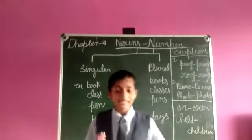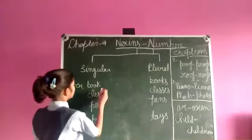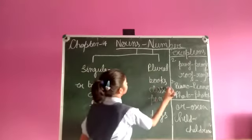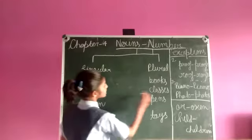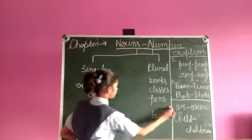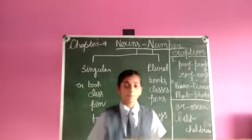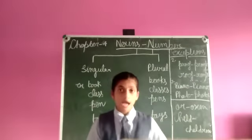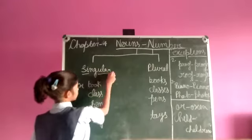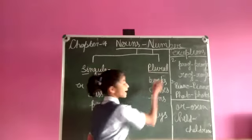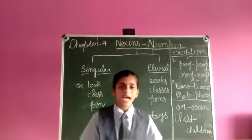By some examples, let's learn about number. Book becomes books, class becomes glasses, pen becomes pens, toy becomes toys. These are some examples of numbers. Numbers are of two types: first, singular number; second, plural number.